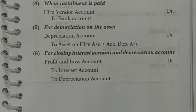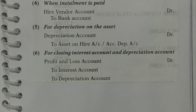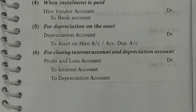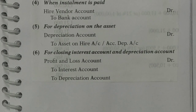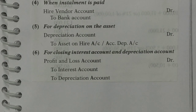Then the sixth entry: since interest and depreciation are expenses, I need to close these accounts by transferring their balances to the main P&L — the trading and profit & loss account. So the entry will be: P&L debited to interest on hire purchase and to depreciation. By this I am closing both the accounts of interest and depreciation.